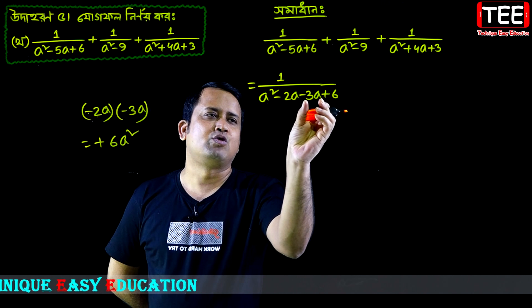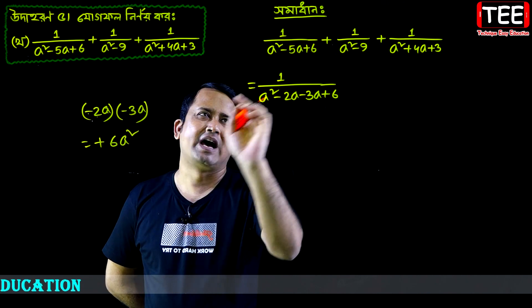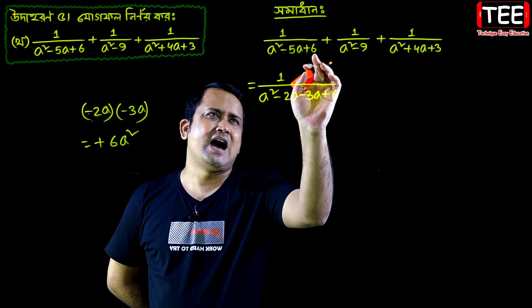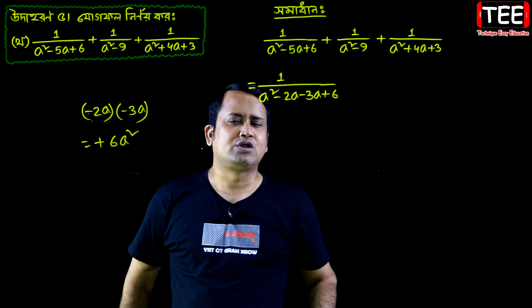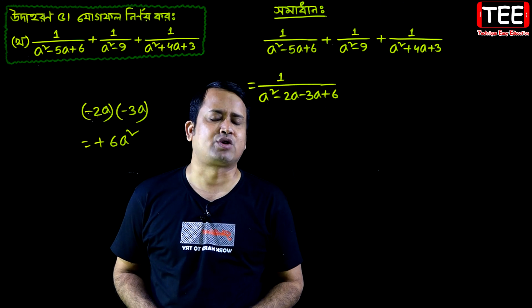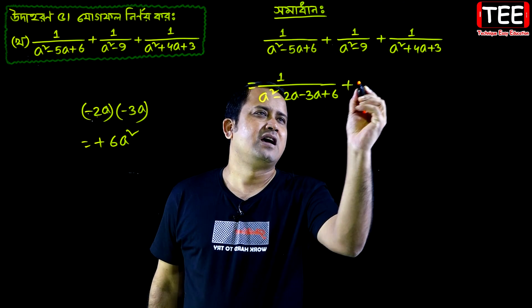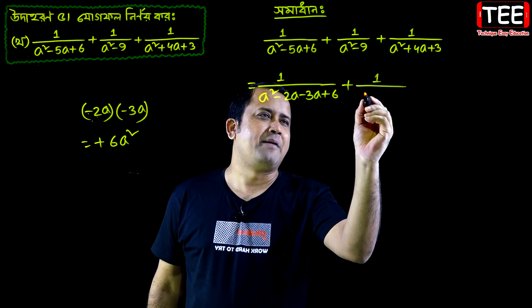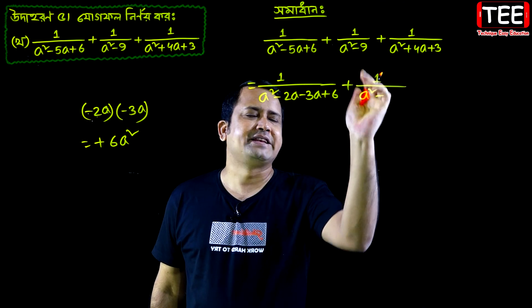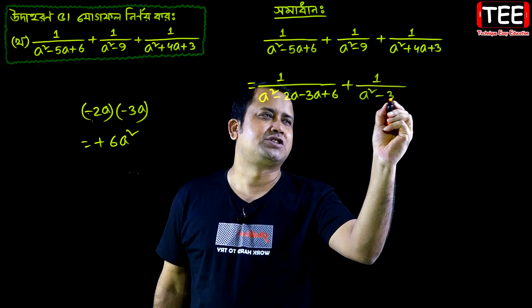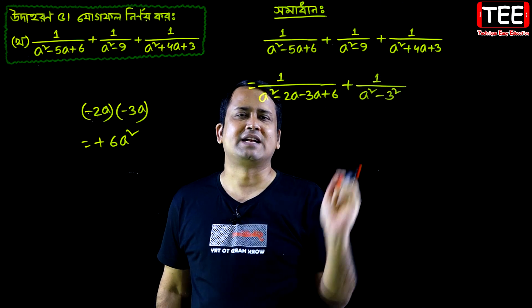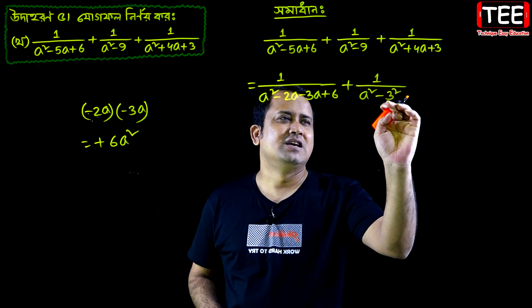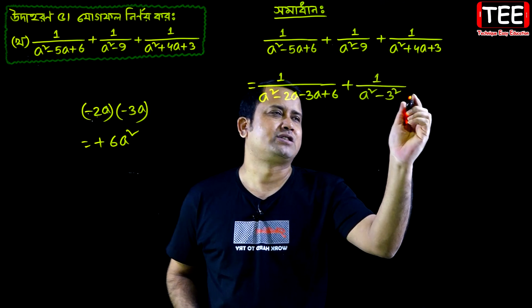6a square plus a square minus 9. To write 3 square — 3 square means 9. So a square minus 3 square means 9.